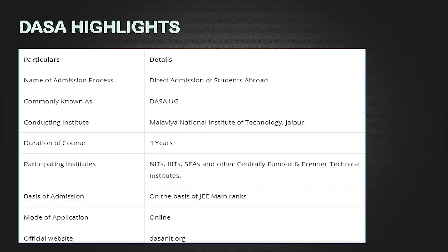DESA, which stands for Direct Admission of Students Abroad, is a counseling process by which foreign nationals can take admission in Indian colleges. For this year — fall 2021 — this entire process is being coordinated by NIT Jaipur, popularly known as MNIT Jaipur, Malaviya National Institute of Technology Jaipur.